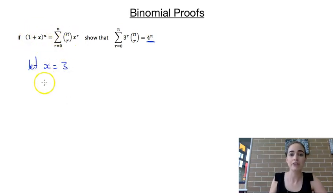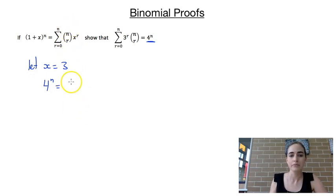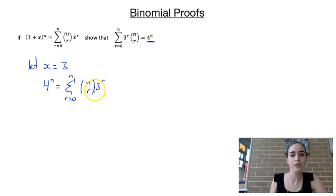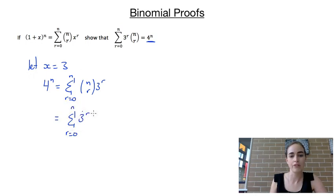Substituting x = 3 gives us 4 to the power of n on the left-hand side. On the right-hand side, rewriting the summation with x = 3, we get the sum from r = 0 to n of nCr·3^r. Rearranging to bring the 3^r in front of the combination gives us the sum from r = 0 to n of 3^r·nCr. That completes the proof for that example.